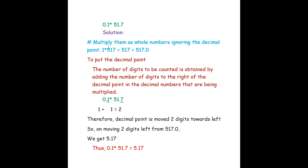The next question is 0.1 into 51.7. Again we have two decimal numbers. First, ignore the decimal points and multiply as whole numbers: 0.1 becomes 1 and 51.7 becomes 517. 1 into 517 is 517, which we express as 517.0.